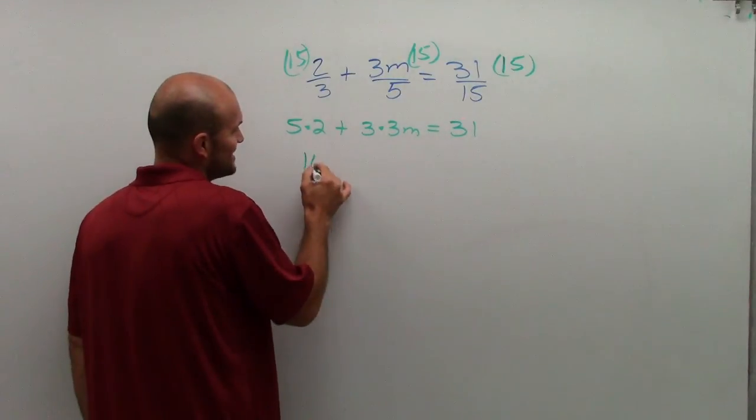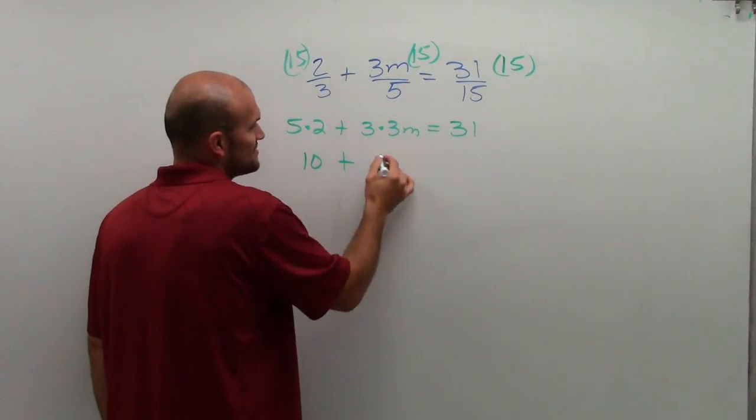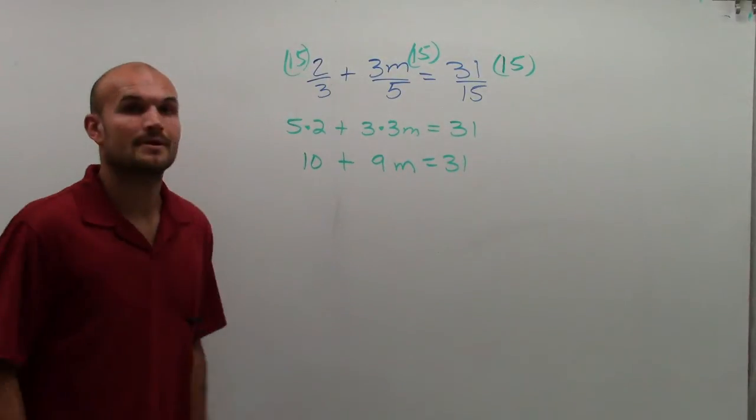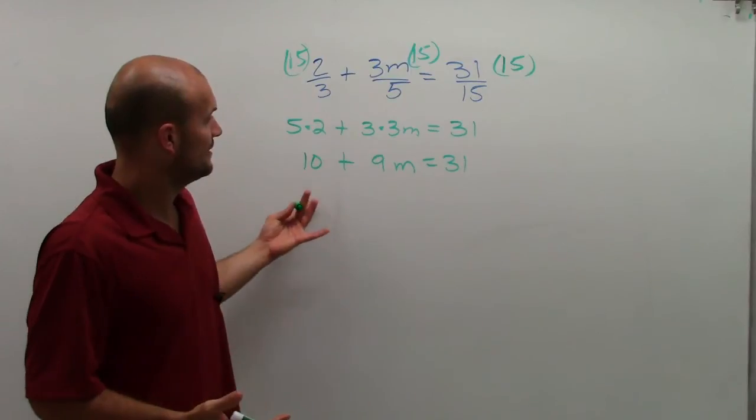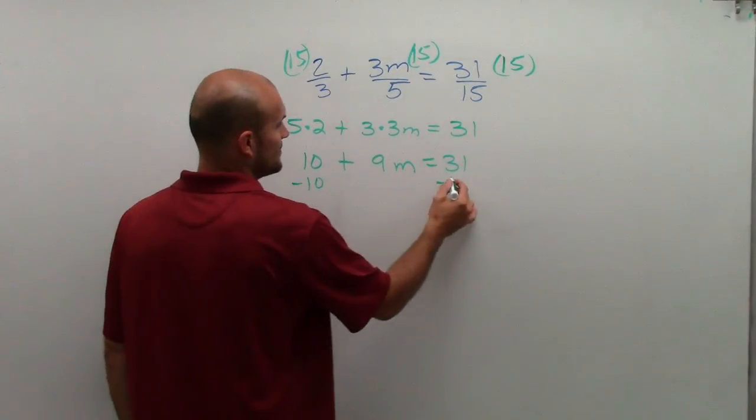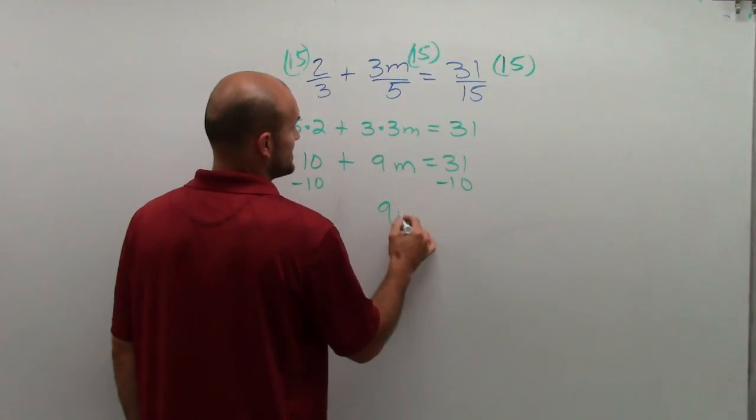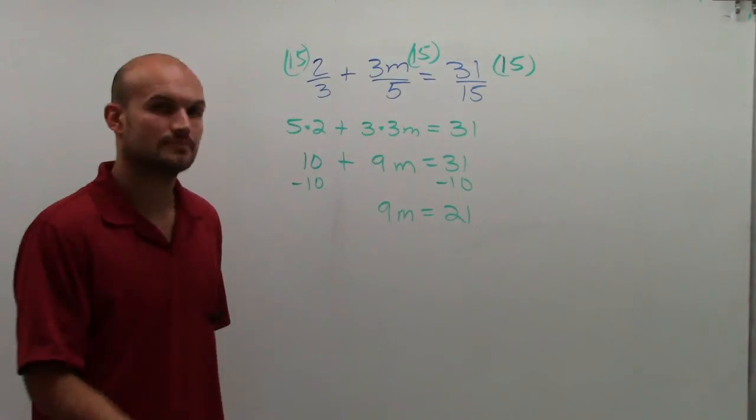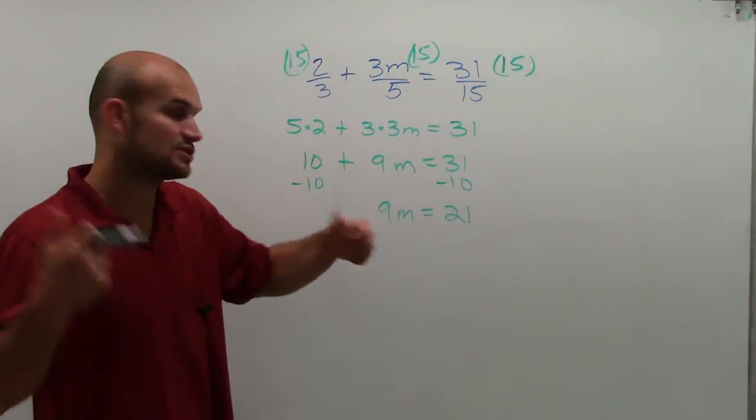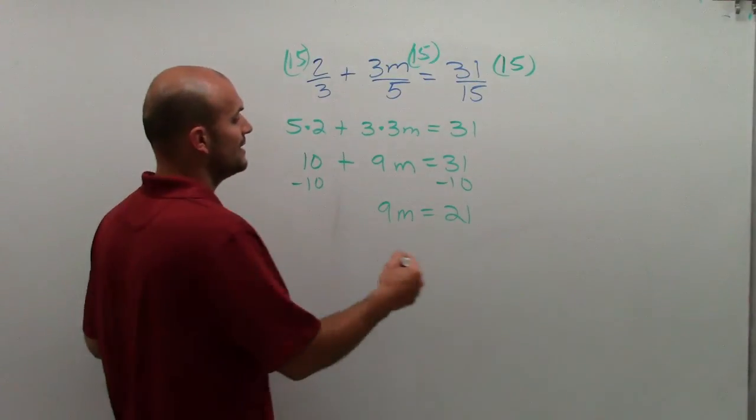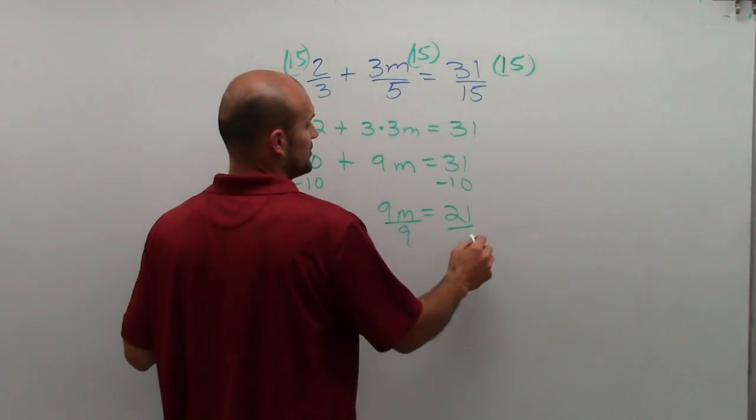5 times 2 is 10, plus 3 times 3 is 9m, equals 31. So now you can see what we've done here. I'll just subtract 10 on both sides, and now I obtain 9m equals 21. So we have a two-step equation, which is good. Subtraction property of equality produces my equivalent equation here. Now I can just divide by 9 on both sides.